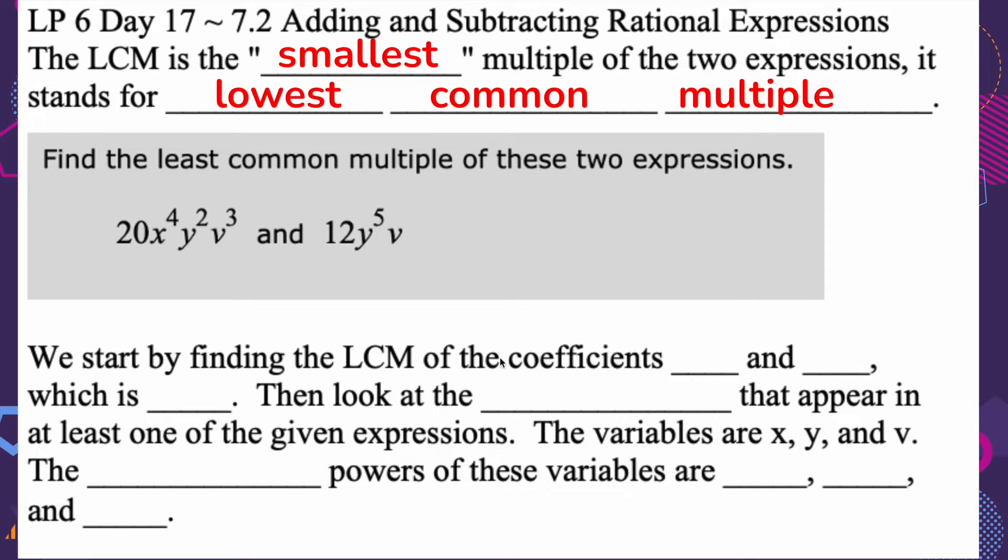So we start by finding the lowest common multiple of the coefficients, 20 and 12. So if we look at the multiples of 20 and 12, we want to know what's the lowest common that they can go into. So 20, 40, 60, and then for 12, 12, 24, 36, 48, 60.